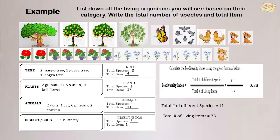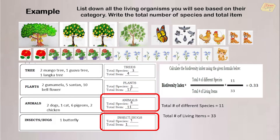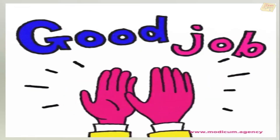Now, based on the data, which species has the greatest total in number? That is animals. Which species has the lowest total in number? That is insects. Therefore, what is the biodiversity index? The answer is 11 divided by 33, which is equal to 0.33. Very good, class.